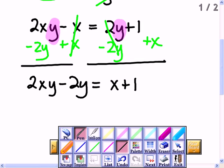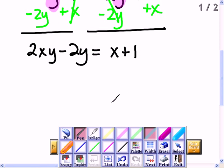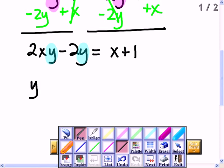And now the terms that have a y, I can factor a y from both of these terms. And that would leave me with 2x minus 2.